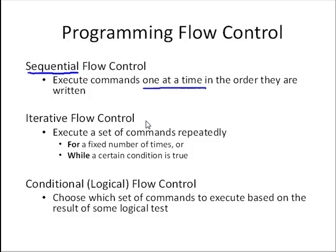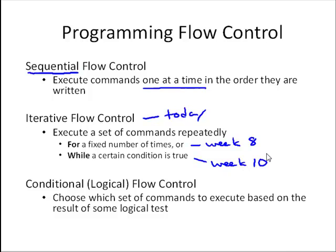Today in this video we're going to talk about iterative flow control, and in particular for loops. Iterative flow control is where we want to execute a set of commands repeatedly. We might do that for a fixed number of times — that's this week in week 8 — or we might do that while a certain condition is true, which we'll cover in week 10. We call all of these 'loops' because we're looping through a section of code multiple times.